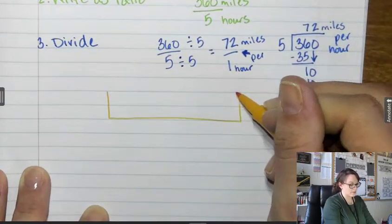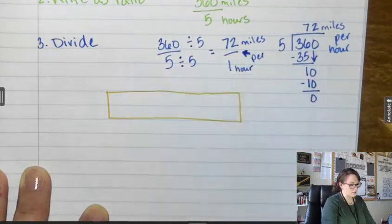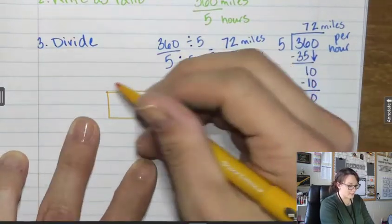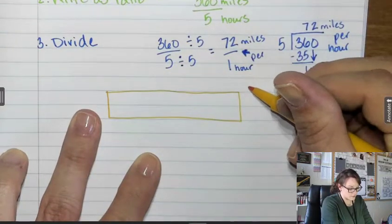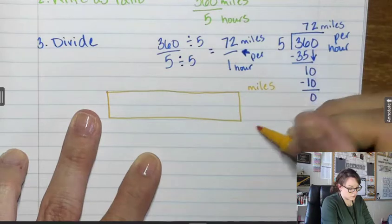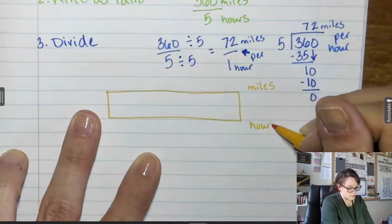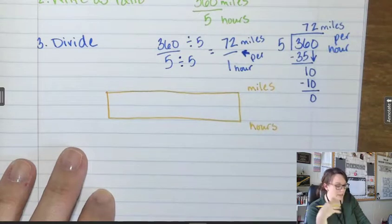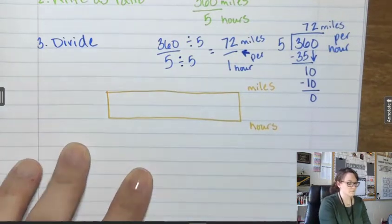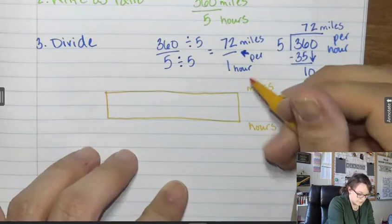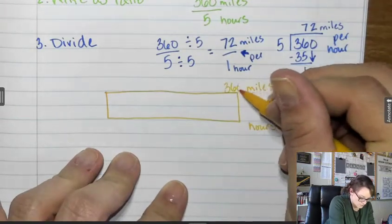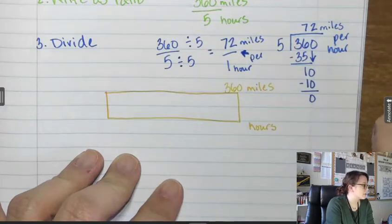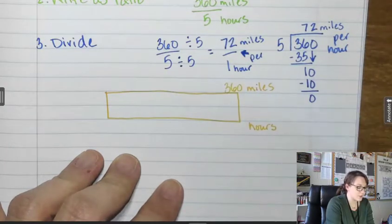I am comparing miles to hours. How many miles did I go total? 360. So this end of the strip diagram will represent 360 miles. How many hours did that take me? Five hours. So this end is going to be zeros. Zero miles and zero hours.